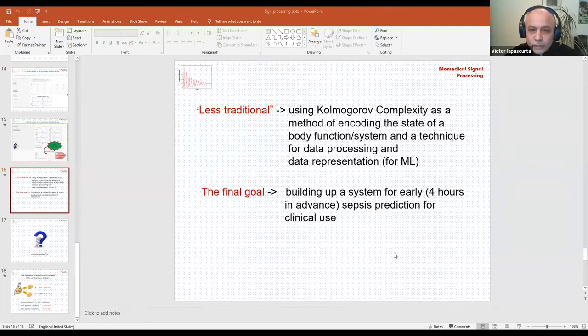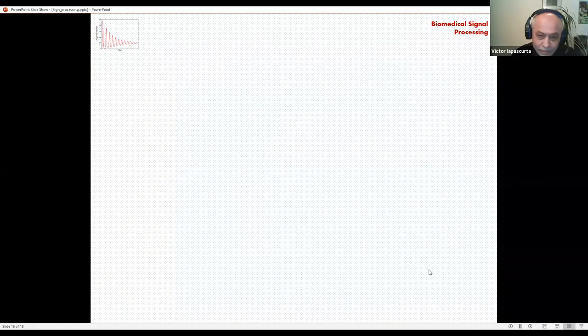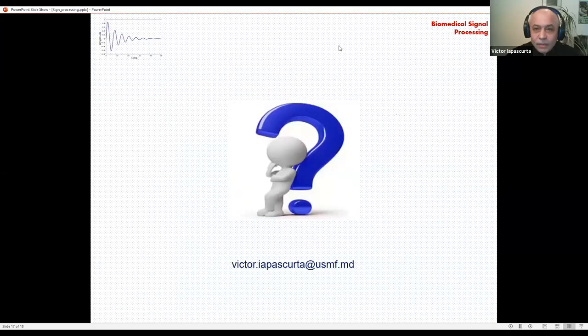So just to summarize, once again what is meant here by less traditional. This is using Kolmogorov complexity as a method of encoding the state of body system or function, and as well as a technique for data processing and data representation. I exemplified this by my presentation. And the final goal of all this activity is building up a system for early sepsis prediction for clinical use. We are at the moment at the beginning stage of this journey. And now maybe there are questions.